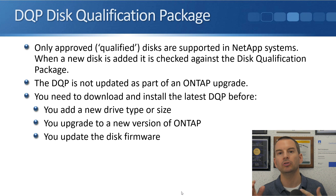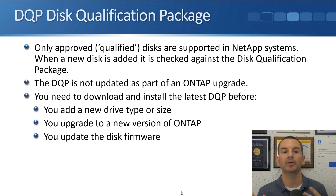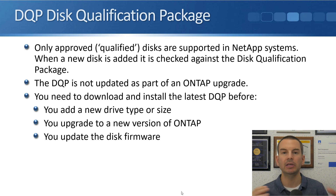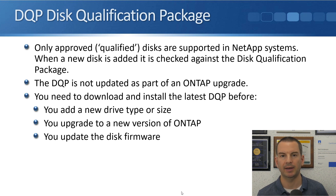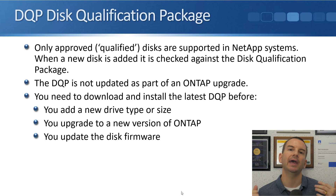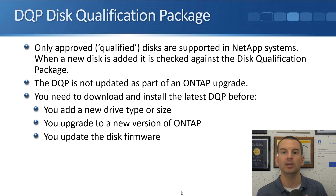Before you do your ONTAP upgrade, upgrade the DQP first. It's really easy to do — just look on the NetApp website, download the file, put a couple of commands in at the command line and you're done. You can then do your main ONTAP upgrade using the System Manager wizard.